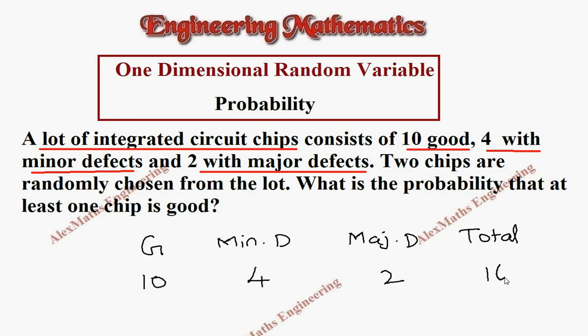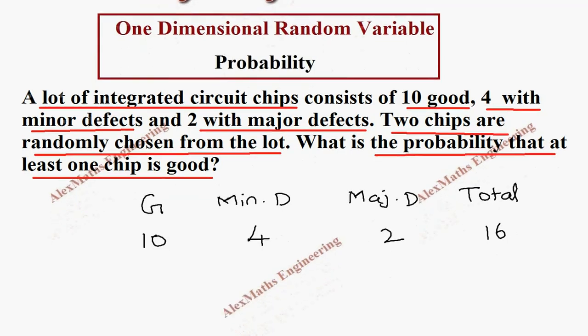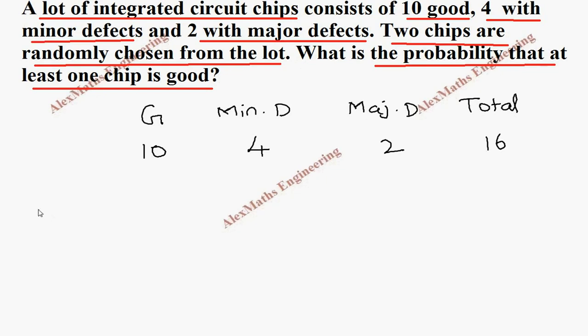which is 16. Further in the question, two chips are randomly chosen from the lot and we have to find the probability that at least one chip is good. So we need at least one chip is good, so probability